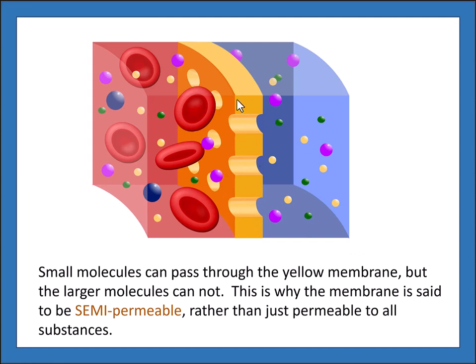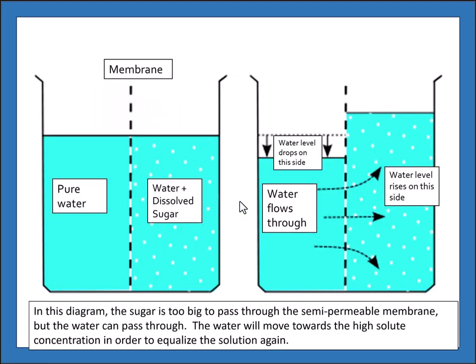Small molecules can pass through the membrane easily but larger molecules cannot — this is why the membrane is said to be semi-permeable. In an osmosis example, sugar on one side of a semi-permeable membrane is too large to pass through, but water — H₂O — is a much smaller molecule and can pass through this membrane pretty easily.